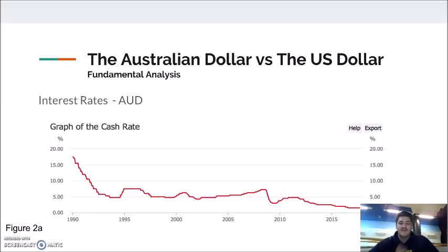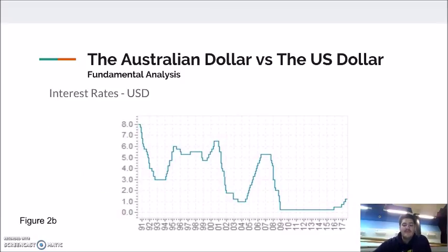Turning to fundamental analysis and interest rates: currently, according to the RBA, the cash rate in Australia is at around 1.5%, which is on a downward trajectory but currently stabilising after being upwards of 15% in the early 90s. The cash rate in the US, according to Global Rates, is currently at 1.25% but rising after being at 0.25% at the beginning of 2016. Generally, an increase in interest rates will encourage capital inflow, increasing demand, while discouraging capital outflow and decreasing the supply of domestic currency.